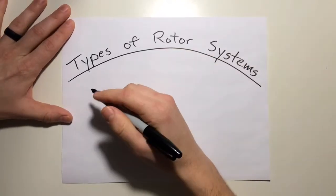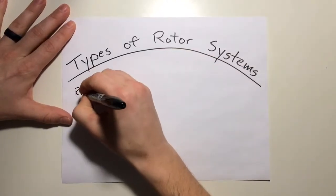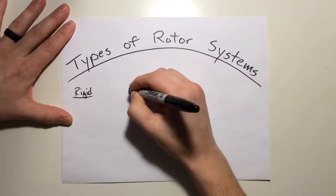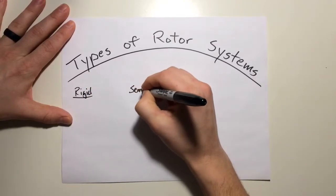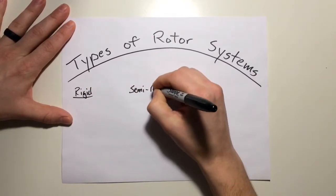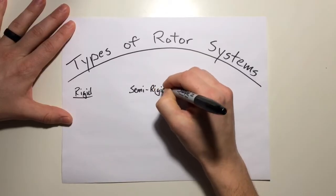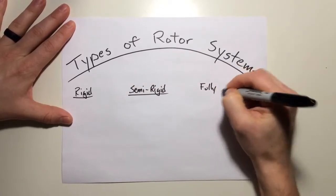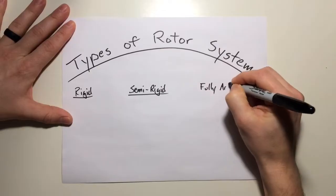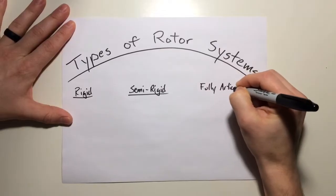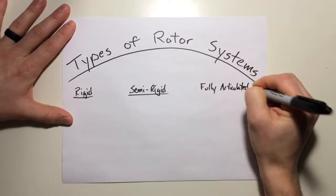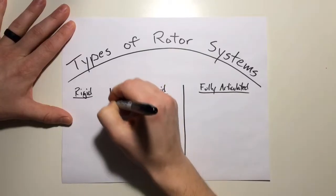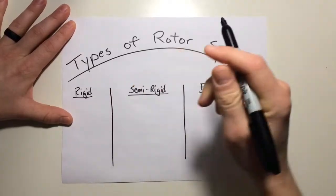For this video, I'll be covering three types of rotor systems. The first one being a rigid system, next one being a semi-rigid system, and lastly we'll cover the fully articulated rotor system. Now, each one is slightly different, but more so just building off of each other.